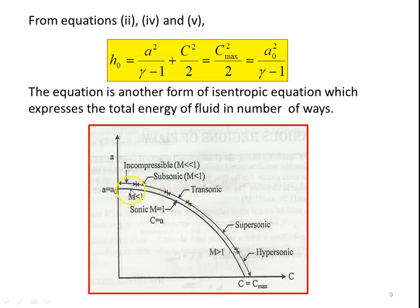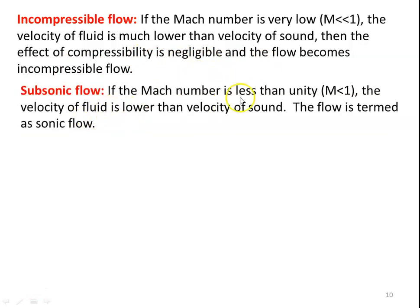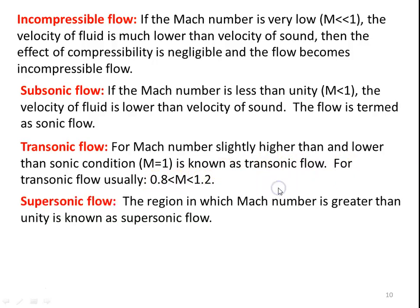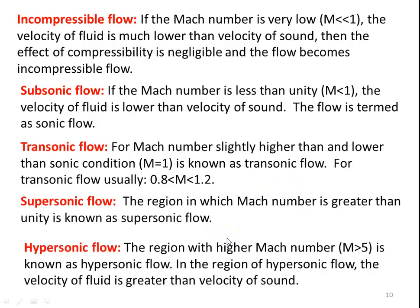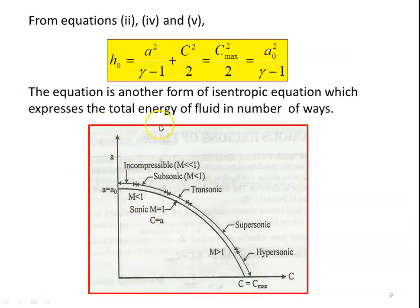Incompressible flow: when the Mach number is very much lower than 1, the velocity of the fluid is much lower than the velocity of sound, so the effect of compressibility is negligible and the flow becomes incompressible. Subsonic flow: Mach number less than unity, velocity of fluid lower than velocity of sound. Transonic flow: Mach number slightly higher or lower than sonic condition, between M = 0.8 and M = 1.2. Supersonic flow: M > 1; hypersonic flow: M > 5. These various regions all depend on the total energy of the fluid.